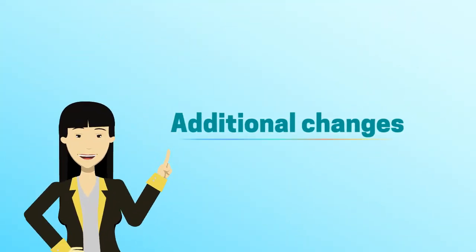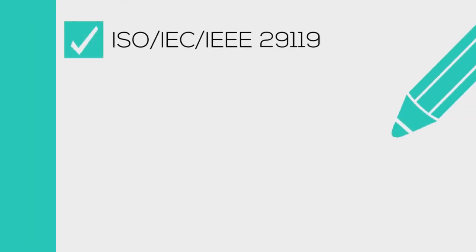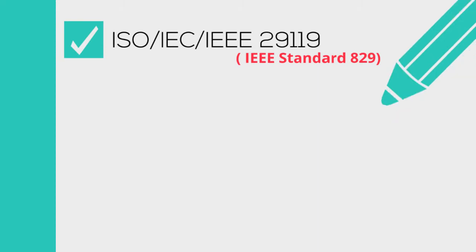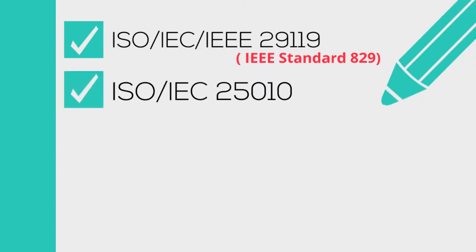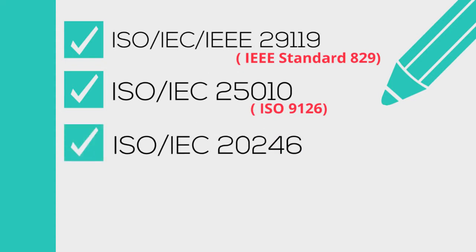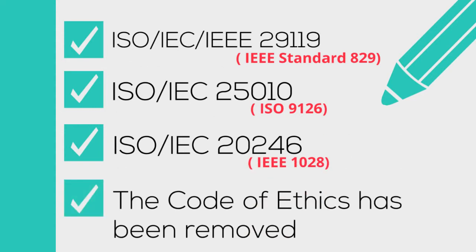Additional changes made to the 2018 foundation syllabus: ISO/IEC/IEEE 29119 is now used for reference instead of IEEE standard 829. ISO/IEC 25010 is now used for reference instead of IEEE 1028. The code of ethics has been removed.